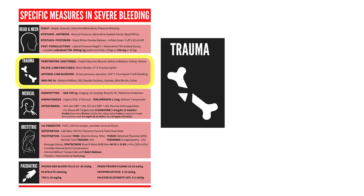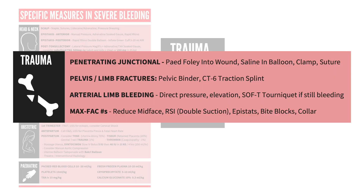Looking next at trauma patients. For penetrating junctional trauma, it's difficult to get compression on the hemorrhage. We may need to put a pediatric Foley catheter into the wound, inject the balloon with saline, and clamp the Foley to stop it draining the bleeding. We'll suture the catheter in place until we can get definitive operative control in theatre. If there are fractures to the pelvis or long bones, we bind and splint those bones. For arterial bleeding from a limb, we apply direct pressure, elevation, and a tourniquet if still bleeding.